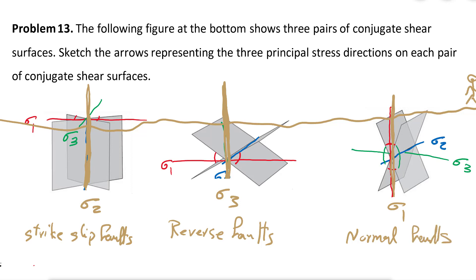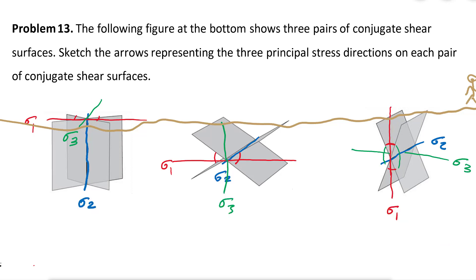Our location on the earth's surface is fixed, but the fractures can be oriented in different directions, and Sigma 1, Sigma 2, Sigma 3 are consistent with respect to those two fractures. The reason we see different types of faults — strike-slip, reverse, or normal — is because of the orientation of Sigma 1, Sigma 2, Sigma 3 in space relative to the earth's surface. Keep in mind: Sigma 2 perpendicular gives strike-slip, Sigma 3 perpendicular gives reverse, and Sigma 1 perpendicular gives normal faults.